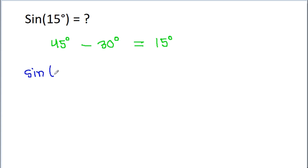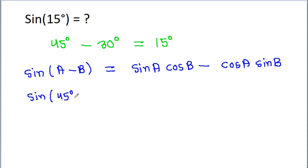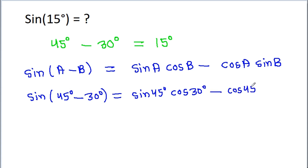So, sin of (a minus b) is equal to sin a cos b minus cos a sin b. Now if we put a equal to 45 degree and b equal to 30 degree, then we get sin(45 degree minus 30 degree) is equal to sin 45 degree cos 30 degree minus cos 45 degree sin 30 degree.